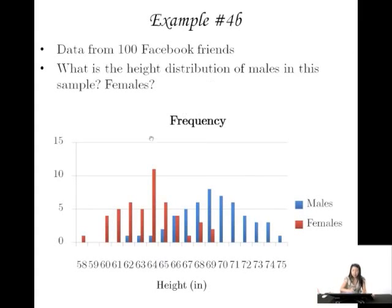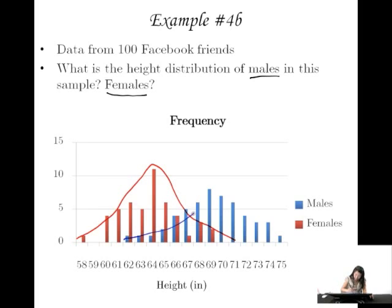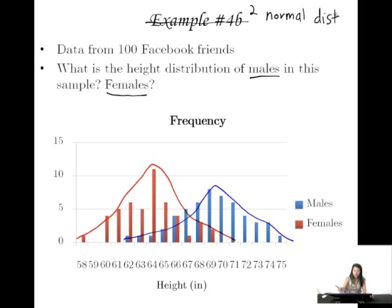Here we see both male and female heights plotted on this frequency distribution. Here's the female distribution and here's the male distribution. You can see there's roughly a normal distribution for the females as well as the males — both unimodal and roughly symmetric on both sides, with no tail and no big gaps or clusters. So what we thought before was a bimodal distribution, we actually see is two normal unimodal distributions.